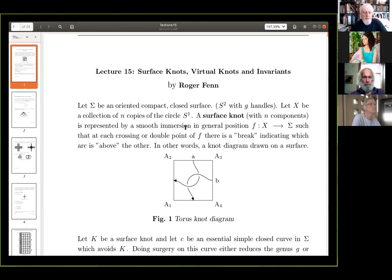And it's in general position, so we only have double points, and at each crossing or double point of F, there is a break indicating which arc is above the other, in whatever sense. In other words, a knot diagram drawn on a surface, so here we have this example which we gave before, it's a torus knot, and it goes from here, down to here, and then round to here, and then back to here again. So, it's a single curve, two double points on a torus.